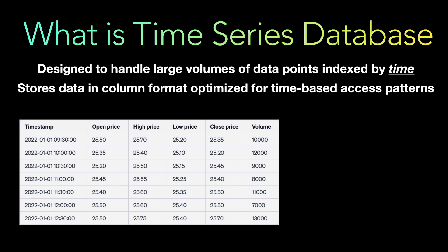Let's say this database is reflecting stock prices. The first column is the time when the stock price data was recorded. The second column is the open price — the price of the stock at the beginning of the time period. Next is high price, which is the highest price during that period. Low price is the lowest price. Close price is the price at the end of the time period. And volume is the total number of shares traded during that specific time period. This is time series data, because stock trading is based on time.